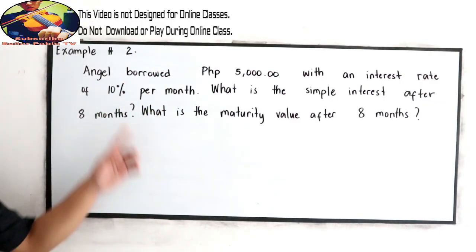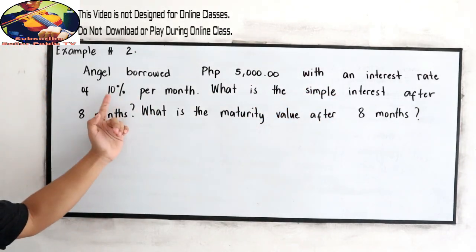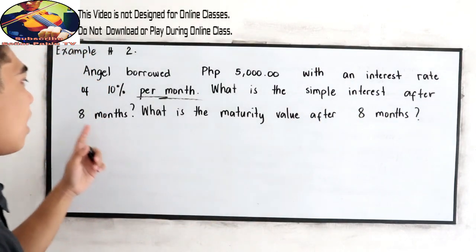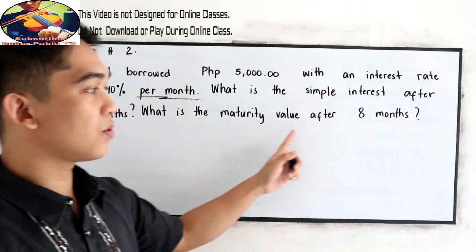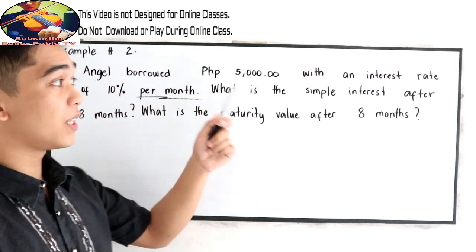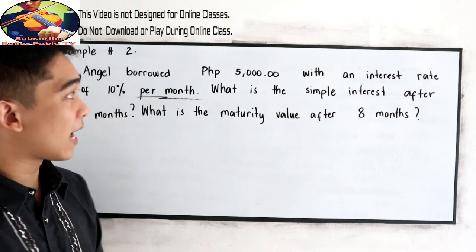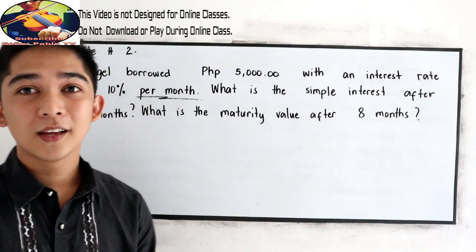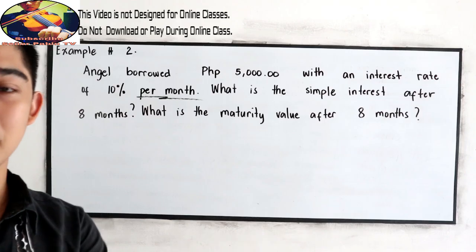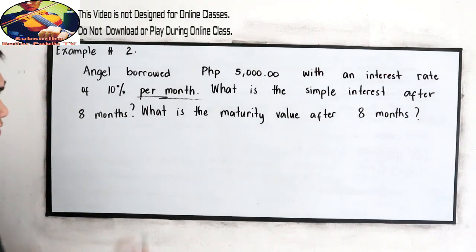The question is Angel borrowed 5,000 pesos with an interest rate of 10% per month. What is the simple interest after 8 months? And what is the maturity value after 8 months? So Angel borrowed 5,000 pesos with an interest rate of 10% per month. So monthly. There will be a 10% interest rate. Try to answer our two questions. Pause the video. Then after answering, you can resume watching to check your answers.